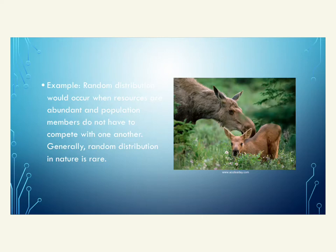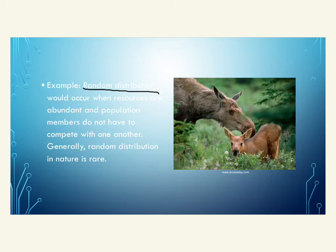The first pattern is random distribution. This is fairly rare — often when we look deeper there is a reason for how things are arranged. A good example that appears somewhat random is moose with their calves in summer: if resources are abundant and competition is low, their distribution would be somewhat random and unpredictable.